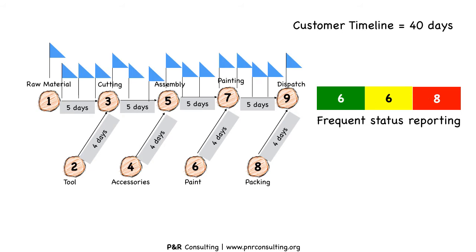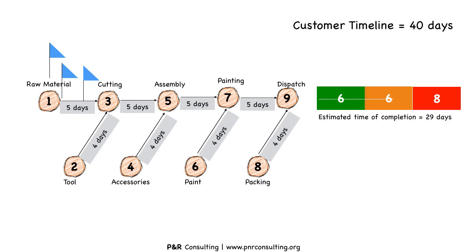An important prerequisite to achieve monitoring effectiveness is frequent status reporting. Let us understand the effect of frequent status reporting in monitoring. In the Q project, assuming an activity startup delay of almost 5 days, we could notice the penetration in yellow zone — the estimated time of completion is 29 days. In the next status report, we get to understand that the project is moving very slowly and the penetration is noticed in the red zone. This is the time for top management to intervene and bring the project back on track.